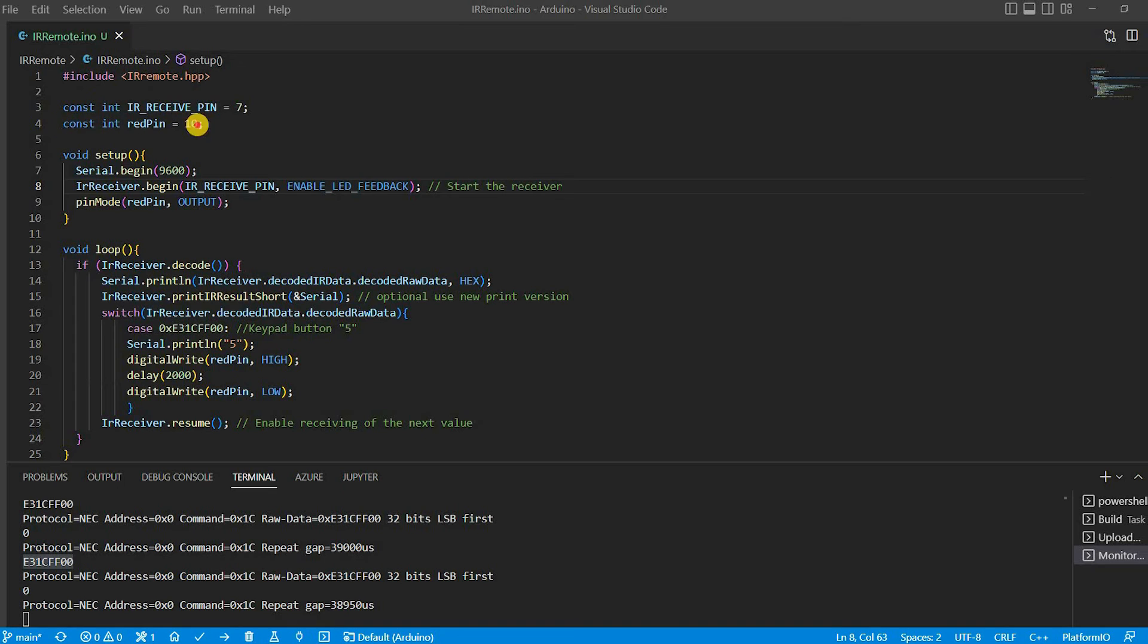I added a definition for pin 10 and set it up as output. I will check the hex code and if it corresponds to key 5 light up the LED for 2 seconds.